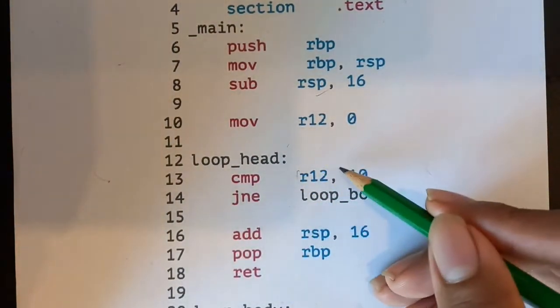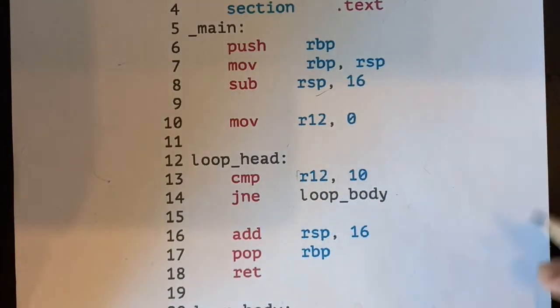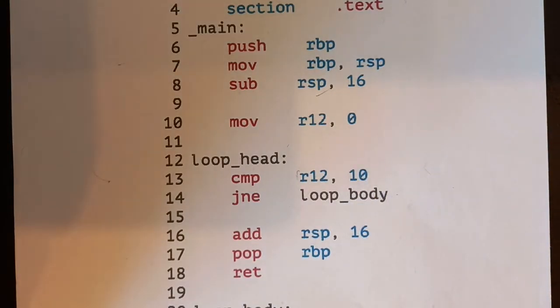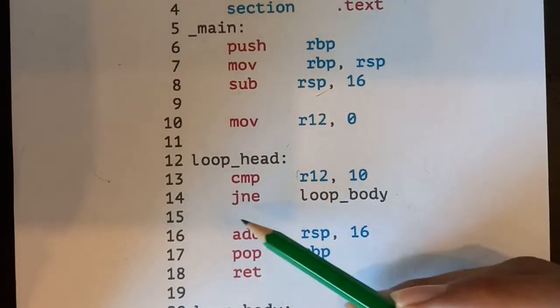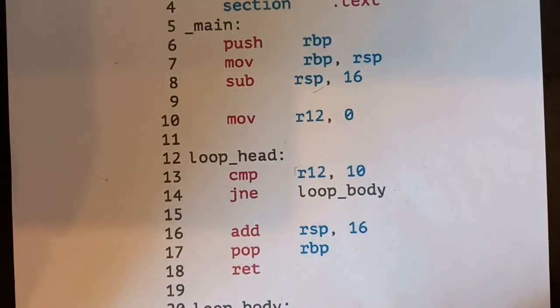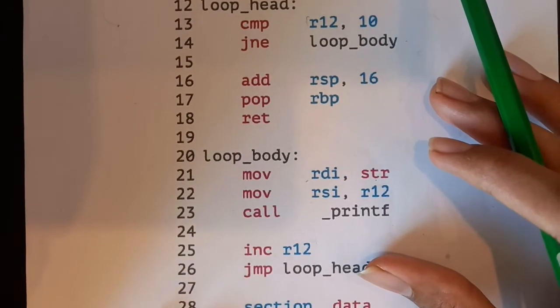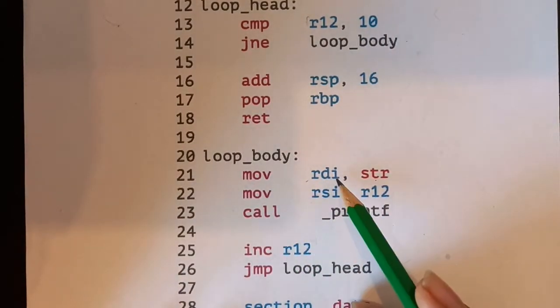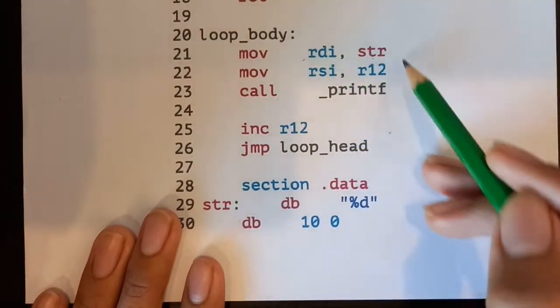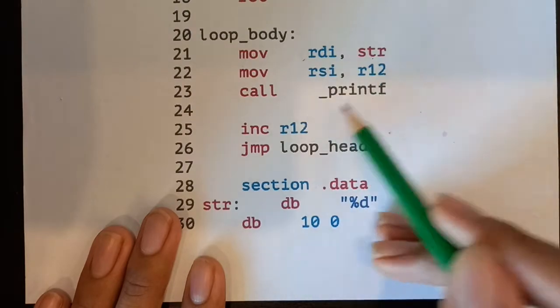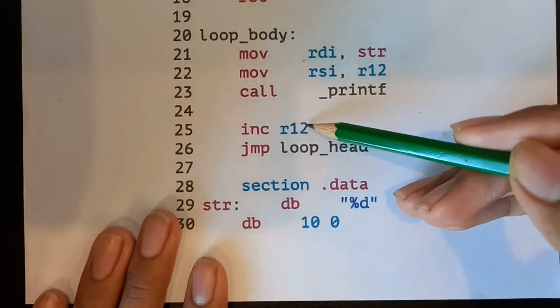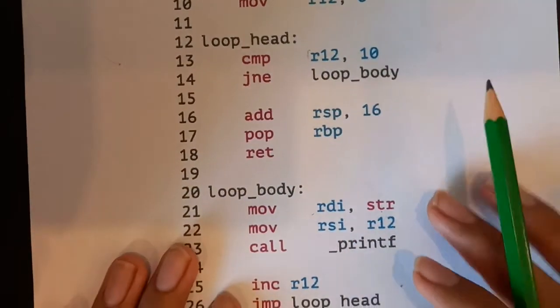Then in our loop head, it compares R12 to 10. So this is i is less than 10. If it's not equal to 10, or this could be a jump less than, then we jump to the loop body right here. And the loop body basically just moves the string to RDI, moves our R12 to RSI and calls printf. So this is just going to print the numbers. And then we increment R12 and we jump back up here to the loop head.